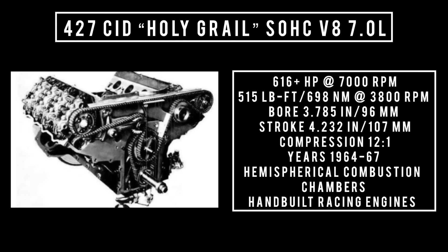The 427 Cammer: 427 cubic inch displacement, single overhead cam V8, seven liters. It's good for 616 horsepower at 7,000 RPM — perhaps more — and 515 pound-feet or 698 newton meters at 3,800 RPM. Bore and stroke sizes are the same as the standard 427. Compression is 12 to 1. It featured hemispherical combustion chambers, a single overhead cam on each head, and camshaft-mounted rocker arms. Produced in 1964 for the 1965 season through 1967.